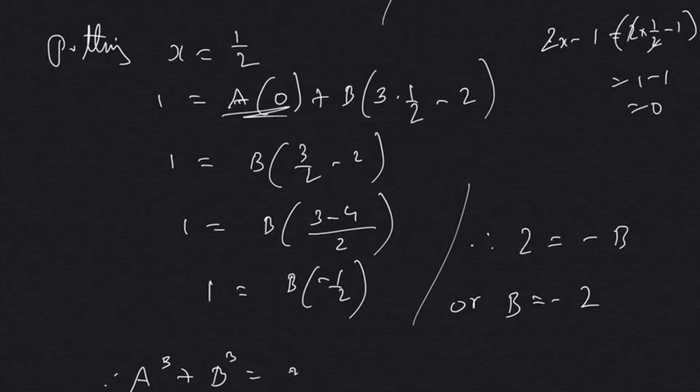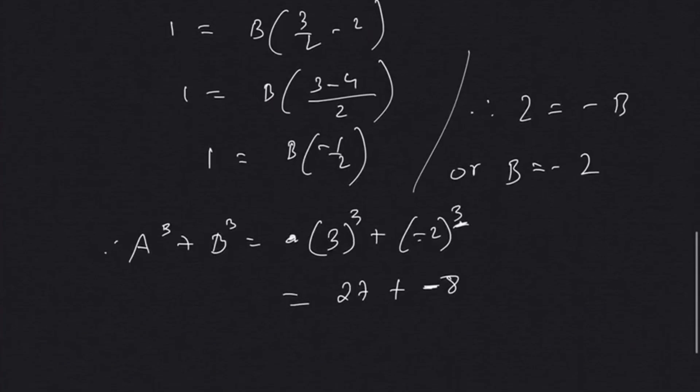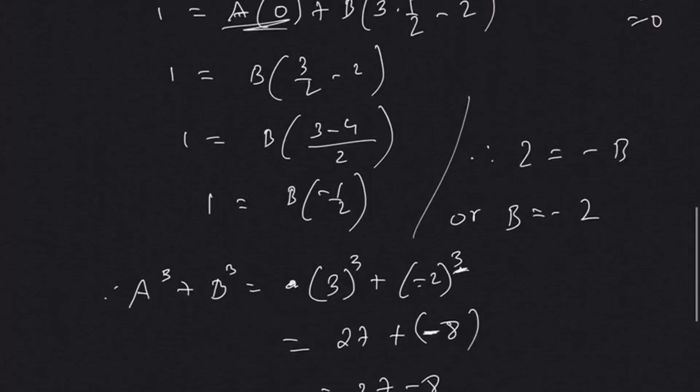Therefore now A³ + B³ equals 3³ + (-2)³. 3 cubed is 27. Minus 8 - negative value raised to odd number will be negative only. So 27 - 8, that's going to be 19. Thank you, signing off from Teach Nagaland. Help us reach more and more subscribers.